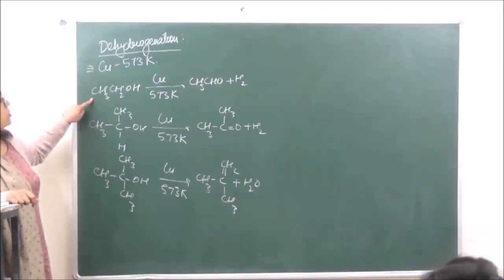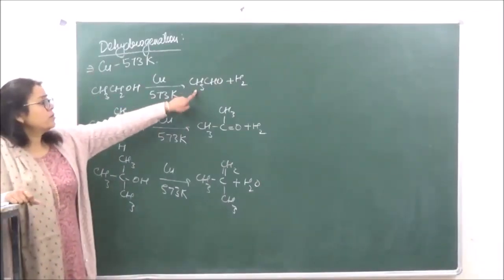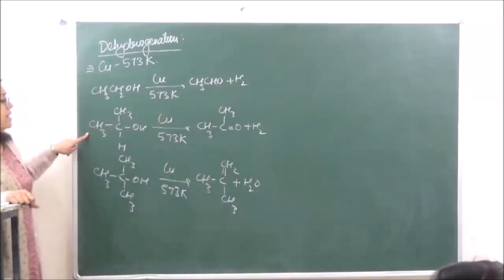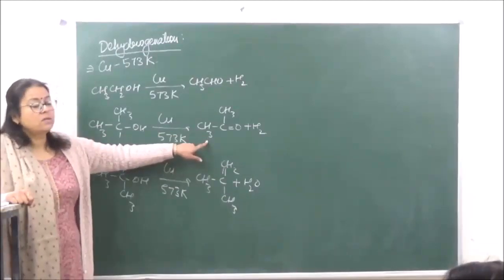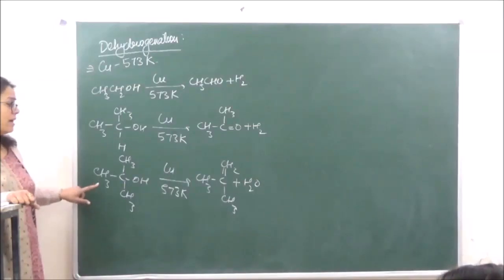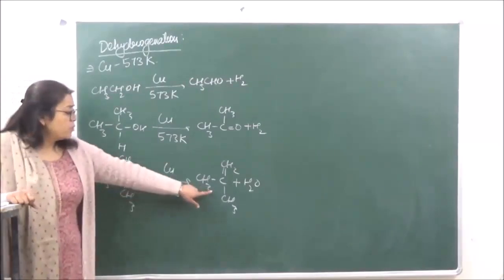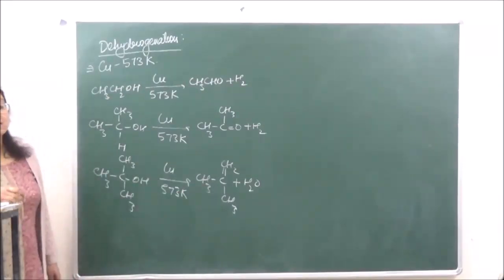When you do the dehydrogenation of primary alcohol, the product will give us the test for aldehydes. If we are doing the dehydrogenation of secondary alcohols, the product will give us the test for ketones. And when we are dealing with tertiary alcohols, they undergo dehydration, and the product gives us the test for alkenes.